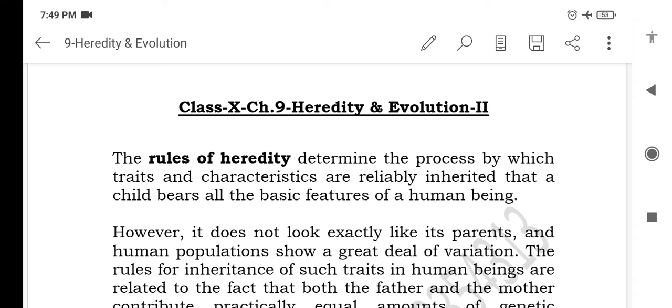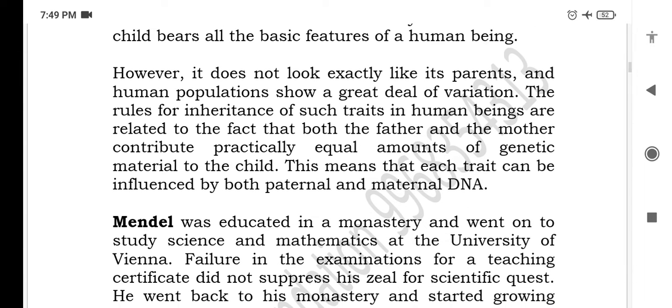The rules of heredity determine the process by which traits and characteristics are reliably inherited — a child bears all the basic features of a human being, but does not look exactly like its parents, and human populations show a great deal of variation. The rules for inheritance of such traits are related to the fact that both the father and mother contribute practically equal amounts of genetic material to the child. This means that each trait can be influenced by both paternal and maternal DNA.